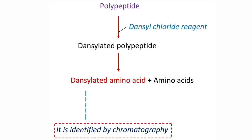Dansyl chloride is not only used for identification of N terminal amino acids, but also for identification of the number of polypeptide chains in a protein. For example, if two different types of dansylated amino acids are obtained, that indicates the presence of two polypeptide chains in the given protein.